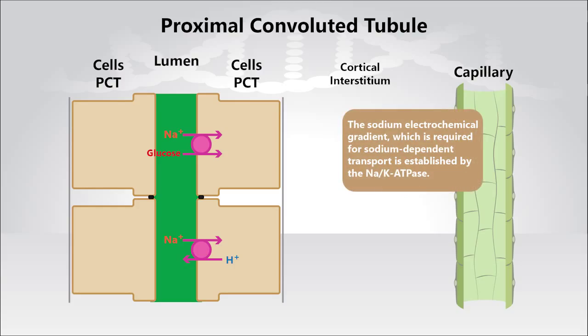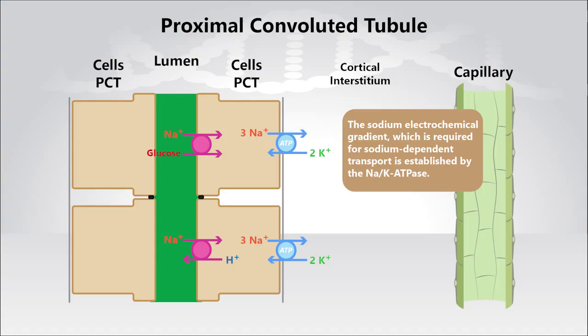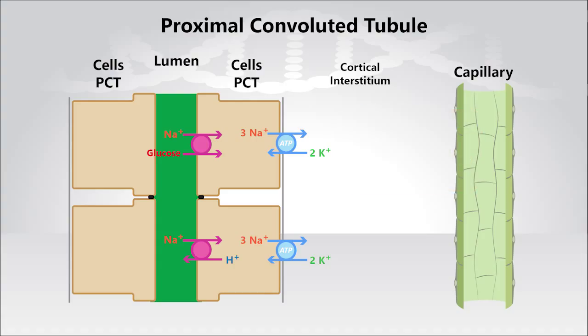The sodium electrochemical potential or gradient, which is required for sodium-dependent transport, is established by the sodium-potassium ATPase, which is exclusively located in the basolateral membrane. The sodium-potassium ATPase pumps three sodium ions from the intracellular fluid compartment into the cortical interstitium in exchange for two potassium ions.